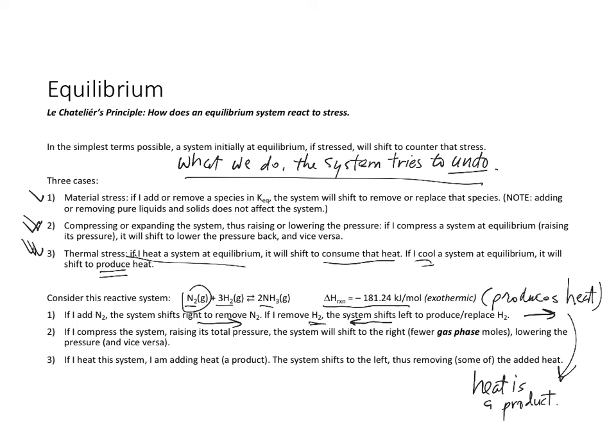If I compress the system, I'm going to raise the total pressure. This system is going to shift to the right because there are fewer gas phase moles that lowers the pressure. Notice, on the left-hand side of the equation, there are four gas moles. On the right-hand side of the equation, there are two gas moles. High pressure is going to favor the side with fewer moles. Low pressure is going to favor the side with more moles. So if this system is at equilibrium and I press on it, I raise the pressure, it's going to shift to the right to lower the pressure back again.